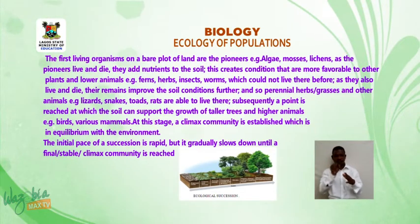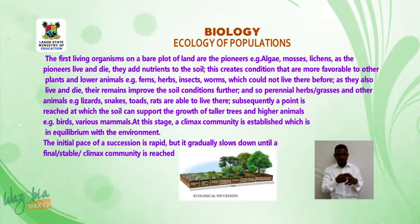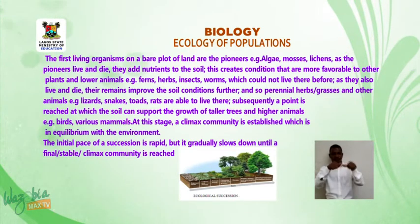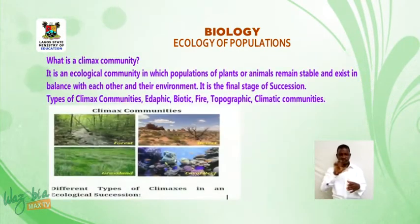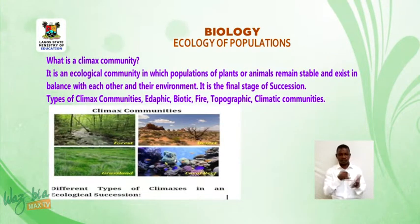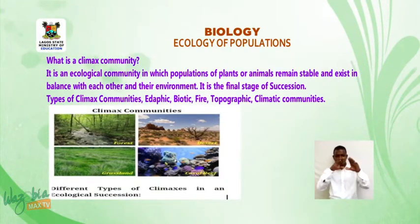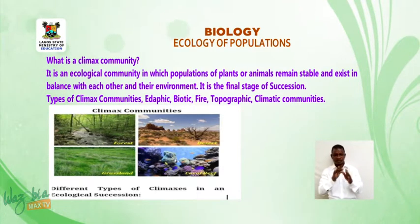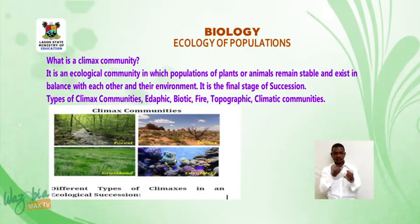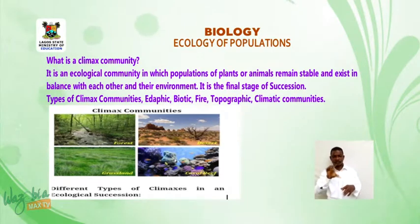At this stage, a climax community is established which is in equilibrium with the environment. The initial pace of succession is rapid but it gradually slows down until a final, stable, or climax community is reached. A climax community is an ecological community in which populations of plants or animals remain stable and exist in balance with each other and their environment. It is the final stage of succession.